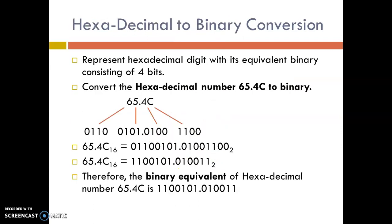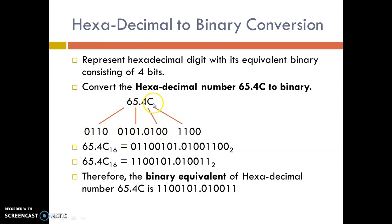Next, we will see how to convert hexadecimal to binary. Since the base is 16 and base of binary is 2, each hexadecimal digit is equivalent to 4 bits of a binary number. We represent each hexadecimal digit as its binary equivalent in groups of 4. The binary equivalent of 6 is 0110, 5 is 0101, 4 is 0100, and C is 1100. We write the binary equivalent of each hexadecimal digit in groups of 4, neglecting any leading or trailing zeros. This is how you convert hexadecimal to binary.